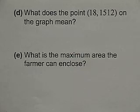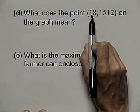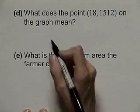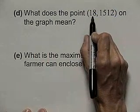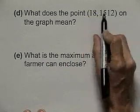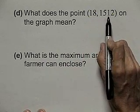Let's continue with that application. The next thing we want to answer is, what does the point 18, 1512 on the graph mean? Well, 18 is an x value. 1512 is an area value on the graph. What that means is, if we were to use parallel sides of 18 feet, the area enclosed would be 1512 square feet.